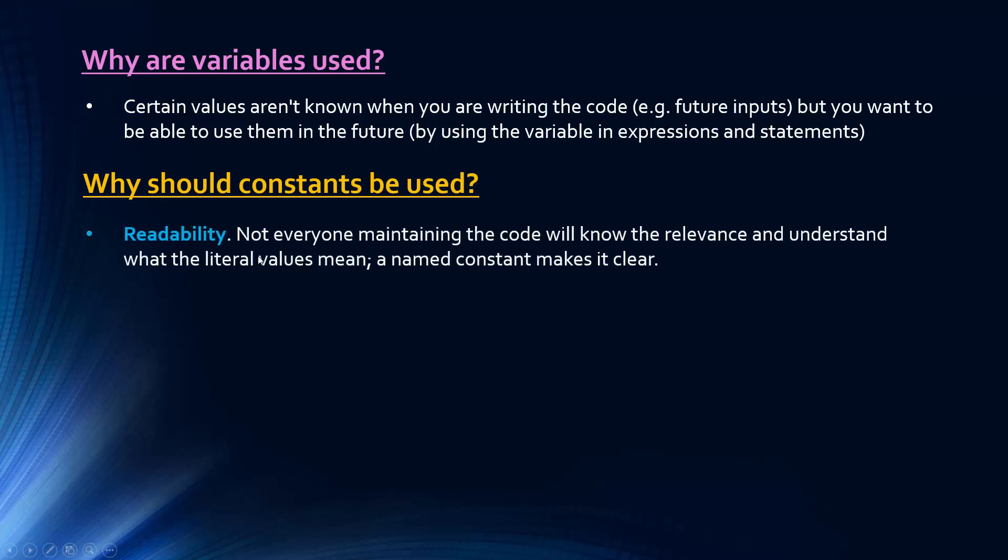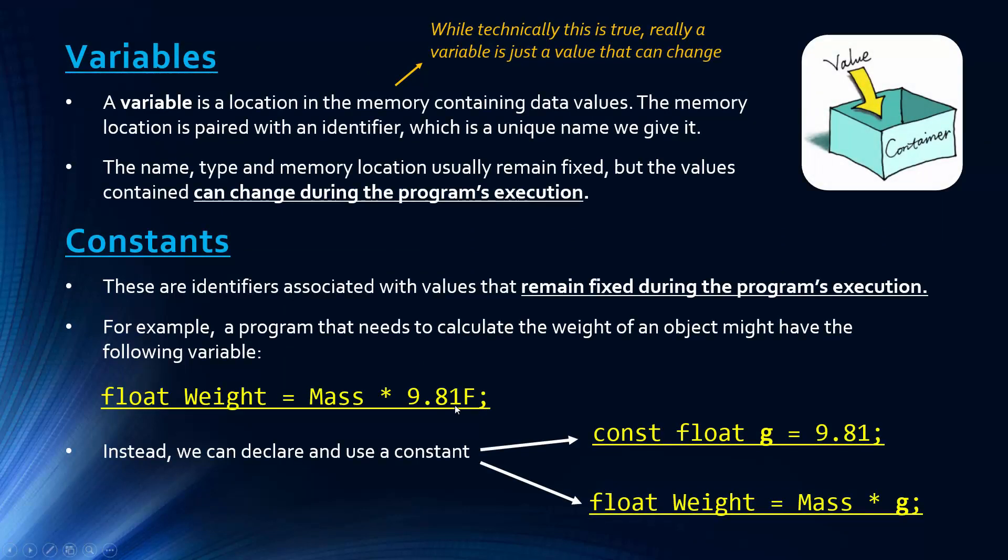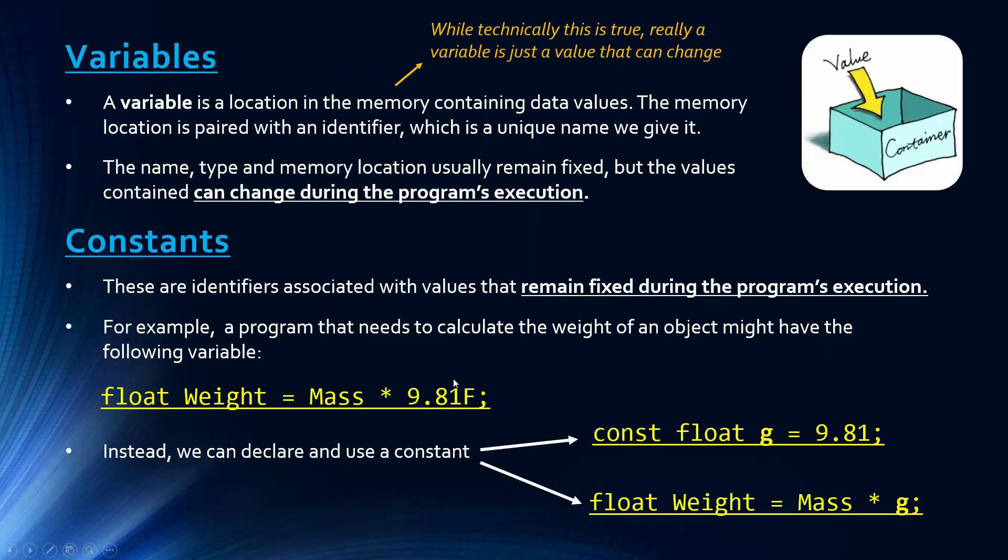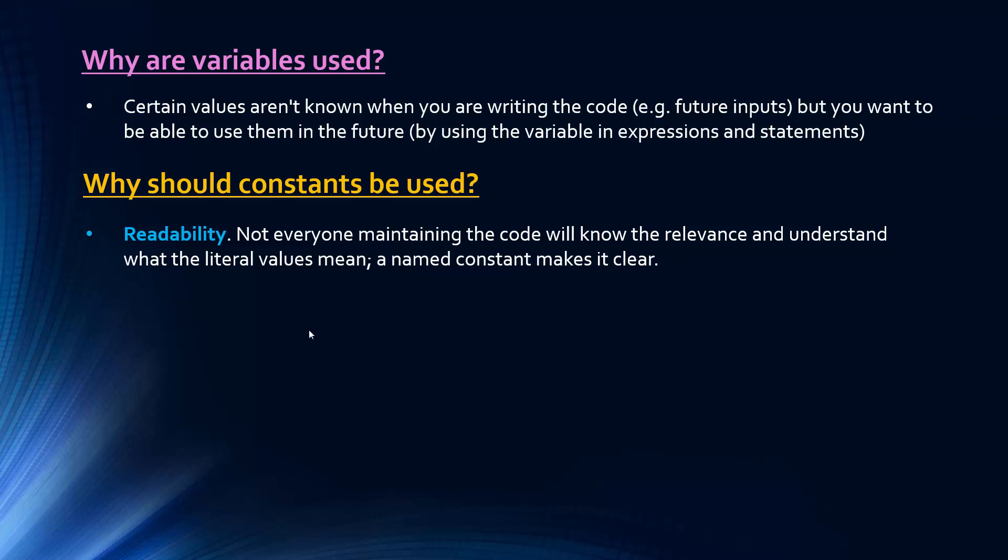Why should a constant be used? Constants help readability. Not everyone maintaining the code will know the relevance and understand what the literal values mean. A named constant makes it clear. A literal is 9.81, for example - it's just something that literally is what it is. A constant has a name which helps for code, similar to descriptive variable names.